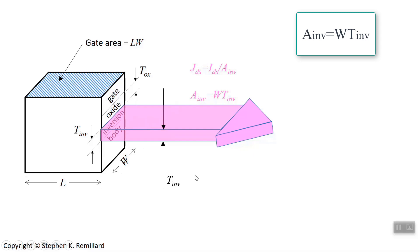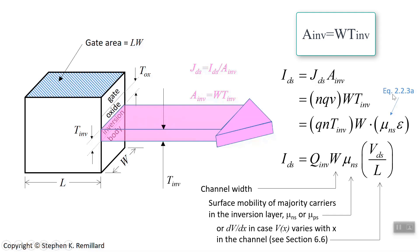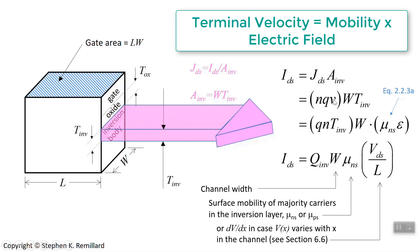Writing the drain-source current: current density times area gives n·q·v times W·T_inv. Replacing velocity v with mobility times electric field — from equation 223a, assuming terminal velocity — we get μ_s times E, where μ_s is the surface mobility. At the surface of a semiconductor, the flow is confined to the inversion layer, so the mobility is slightly different from the bulk mobility. A later lecture will cover the modification to account for surface flow.